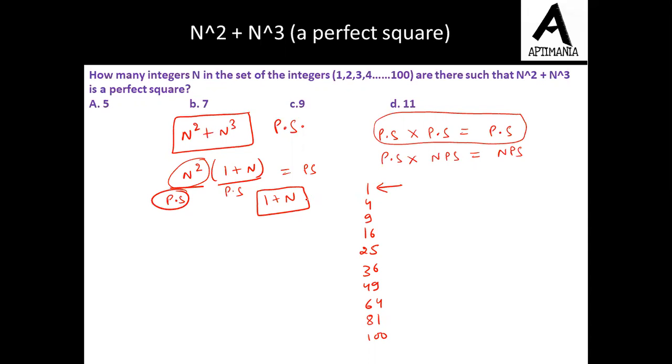Out of this, this value is not possible. Why? Because we cannot substitute the value of n is 0. n is starting from, it is a natural number basically and it is starting from 1 to 100. So we cannot have this value as answer.